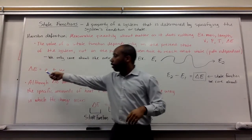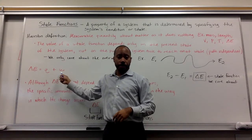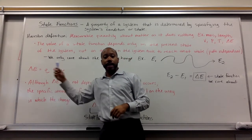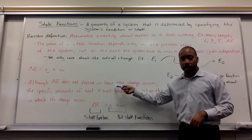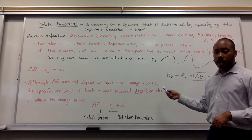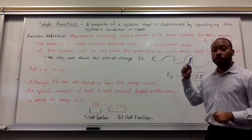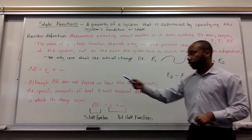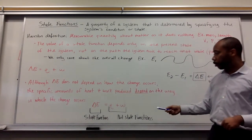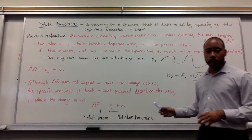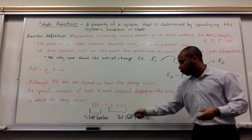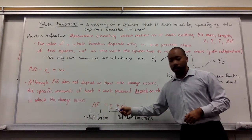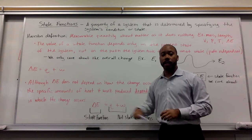So we know that delta E is equal to Q plus W. So delta E is a state function. Although delta E does not depend on how the change occurs, Q and W do. The specific amounts of heat and work produced, they do depend on the way in which the change does occur. So Q and W, these are not state functions, but they do help define the state function delta E.